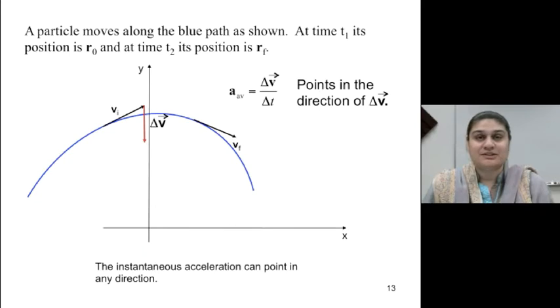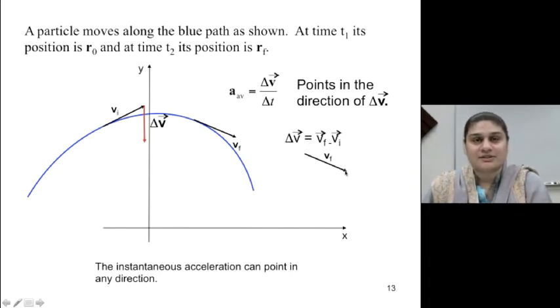Actually it does. So think about it. Delta v is vf minus vi, given by this expression right here. So this means that delta v is in terms of vf and vi. This is my vf, right? This means if I redraw vf here, it will look something like this.